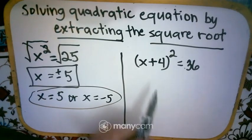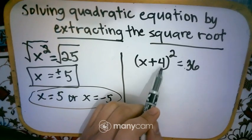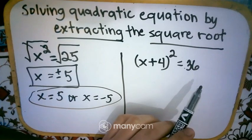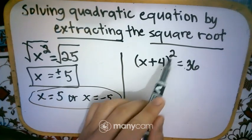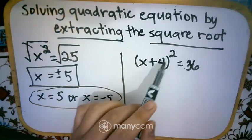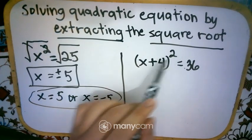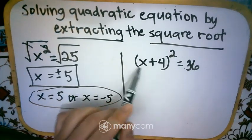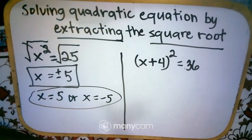Next one is x plus 4 and then squared is equal to 36. So we have here two numbers to remove, so we have 4 and then 2. Because if we're going to remove 4 and 2, the variable x is already alone and we're done solving. And we have 36 on the right side.